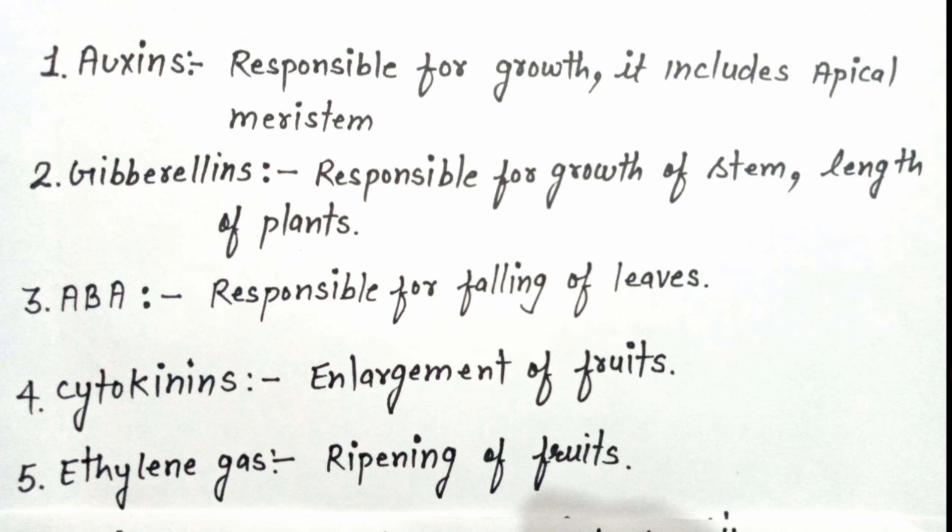Ethylene is responsible for the ripening of fruits. When one fruit is ready to ripen, the gas is released, which is a hormone called ethylene, which is used in the ripening process.